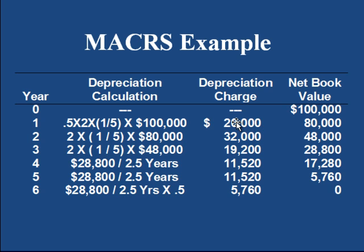If we use a double declining method, the depreciation will fall down quickly, and in the later years, the company would have to pay a higher tax on its profit. But if we use the Modified Accelerated Cost Recovery System, the cost of depreciation declines very slowly — the decline is very modified. This is the purpose of using MACRS for tax purposes.